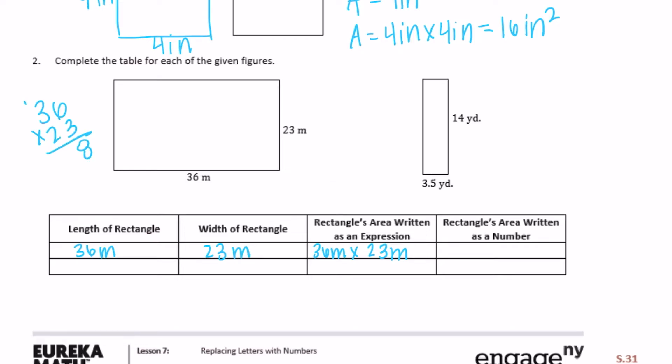Six times three is 18, carry the one. Three times three is nine, plus one is ten. Put our zero down. Two times six is twelve, carry the one. Two times three is six, plus one is seven. Add them together, we get 828 meters squared.